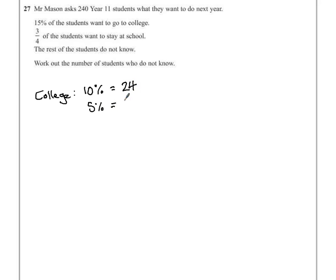Five percent must be half of that value, so that's 12 students. Putting those two together would give us the 15%, which is 36 students.